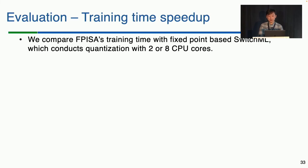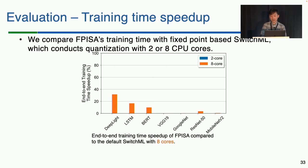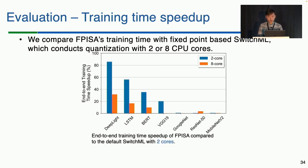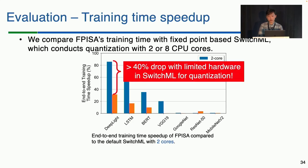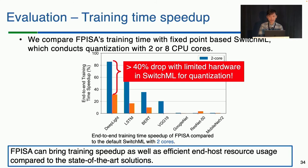We then evaluate training speedup. For fixed-point-based SwitchML, we use two or eight CPU cores for endianness conversion and floating-point quantization. This plot shows FPISA's speedup is much faster than SwitchML. When using eight CPU cores per end-host for SwitchML, FPISA can be as much as 35% faster. This improvement is more significant with limited end-host CPU resources — with two CPU cores, SwitchML sees more than a 40% increase in training time, meaning SwitchML consumes a lot of hardware resources on the end-host side. Hence, we argue that FPISA is a high-performance and efficient approach.